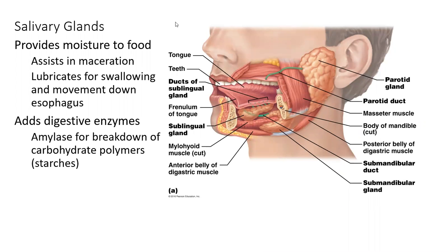We have three types of salivary glands: the parotid gland, the submandibular gland, and the sublingual — so three regions where we have salivary glands. What this does is lubricate food, which helps in the maceration and the chewing, and also helps for swallowing and letting food move down the esophagus without a lot of abrasion. Salivary glands also add amylase, which starts the chemical breakdown of carbohydrates — primarily starches are broken down into simple sugars.